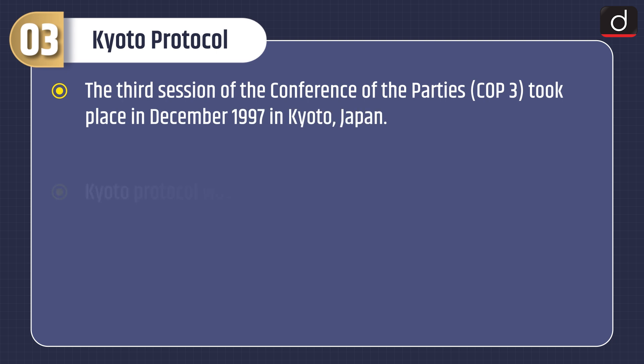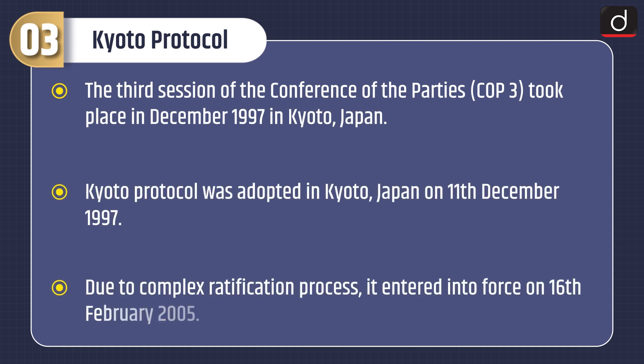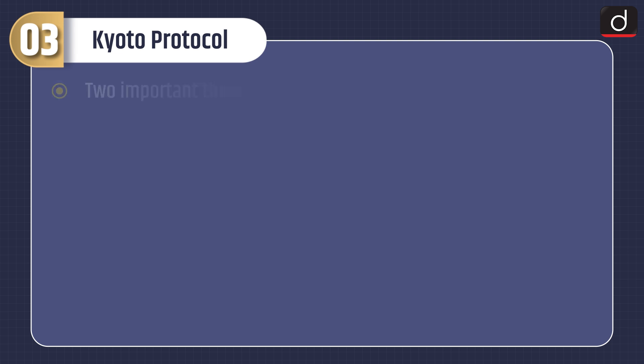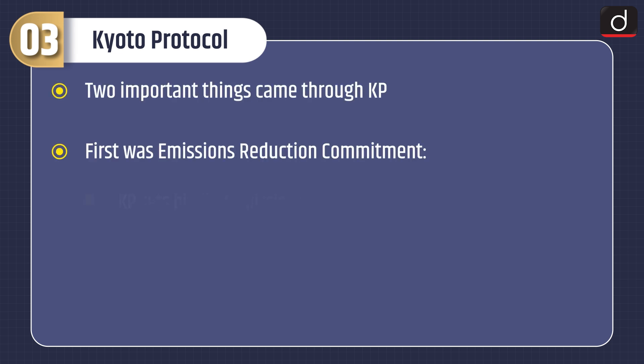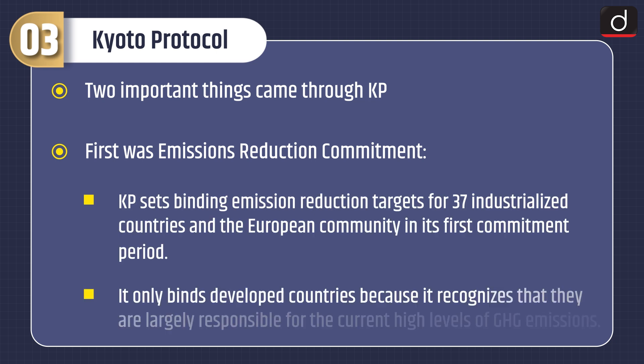Moving on to the Kyoto Protocol — the third session of the Conference of the Parties, or COP 3, took place in December 1997 in Kyoto, Japan. The Kyoto Protocol was adopted on 11th December 1997. Due to a complex ratification process, it entered into force on 16th February 2005. Two important things came through the Kyoto Protocol: first, emissions reduction commitments, and second, flexible market mechanisms.